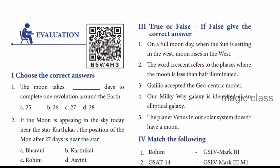Question number 5: The planet Venus in our solar system doesn't have a moon. The answer is true. Two planets - Mercury and Venus - do not have a moon. Jupiter has more than 60 moons. So the answer is true.